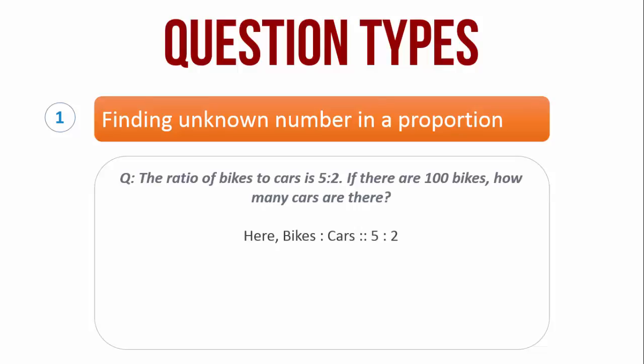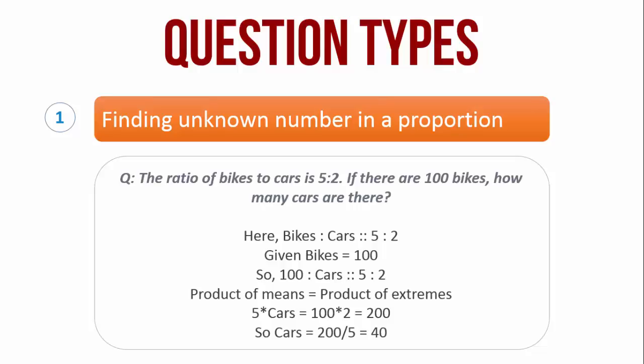Here, bikes to cars is as 5 is to 2 given bikes is equal to 100. So, 100 is to cars is as 5 is to 2. Product of means is equal to product of extremes. Therefore, 5 into cars is equal to 100 into 2 which means cars is equal to 40.